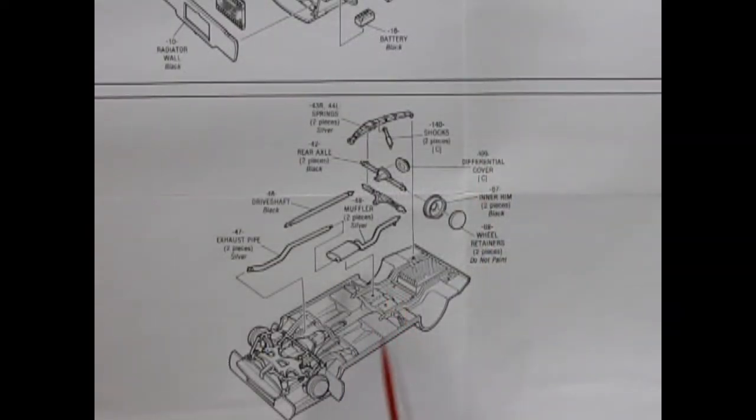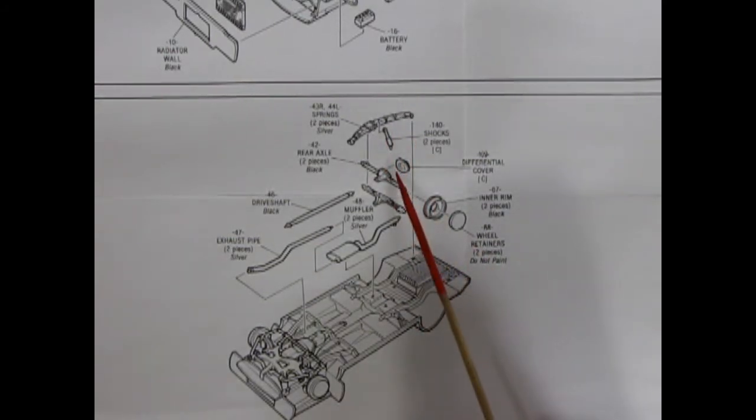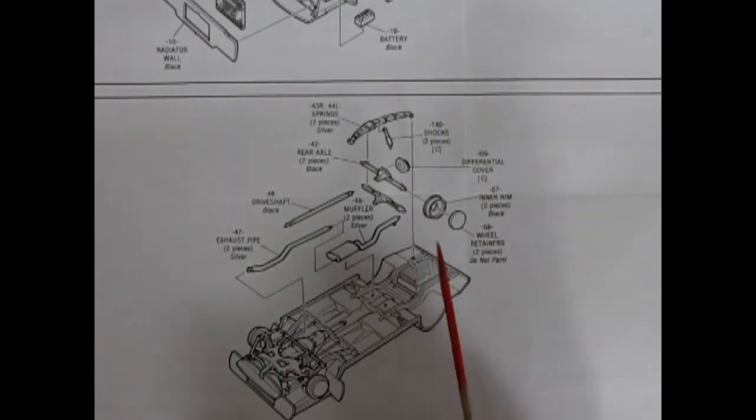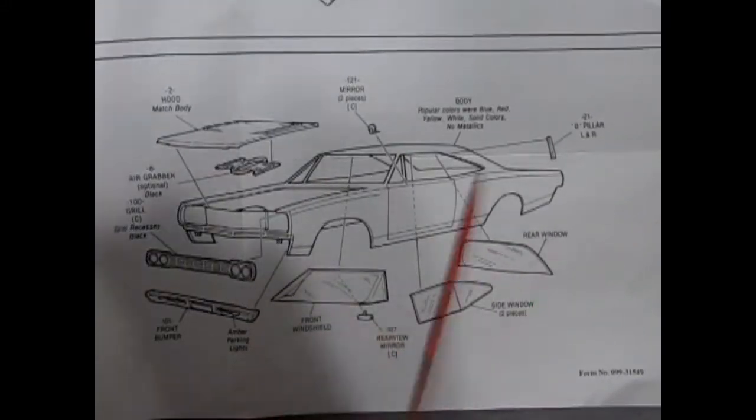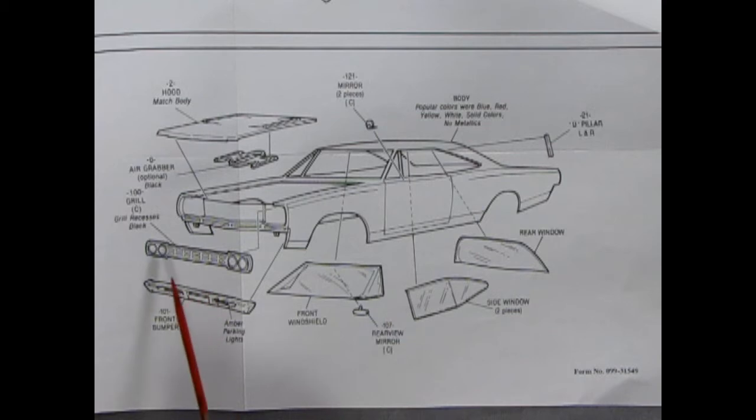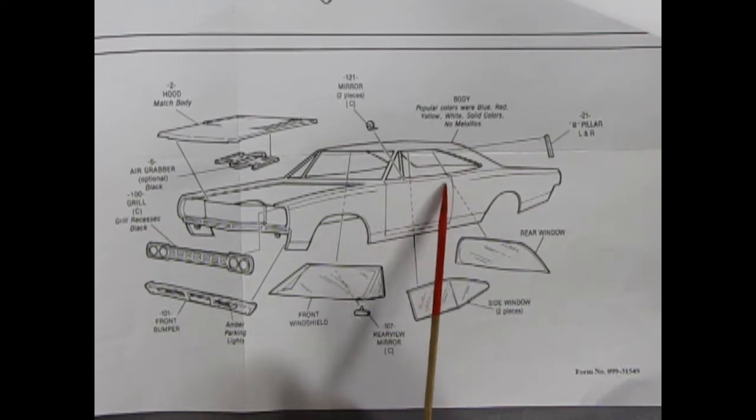Then we have our chassis going together here with the rear leaf springs as well as the shocks, the differential in three pieces and more of the wheel backs with our exhaust pipes with mufflers and the drive shaft. And then getting into this panel here we've got our hood and our body going together, the front grille and the bumper, windshield and all the rest and a B-pillar you glue in here too.